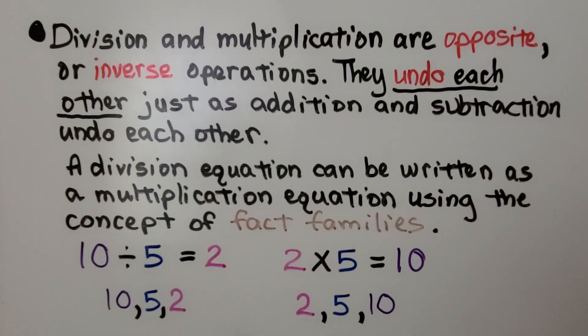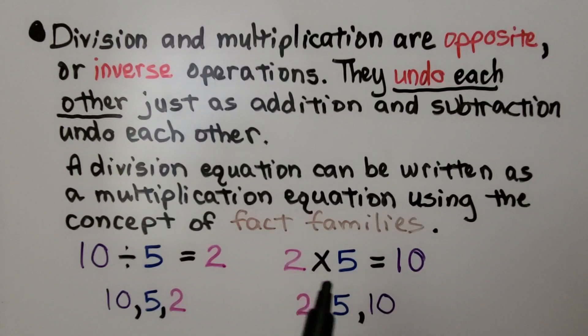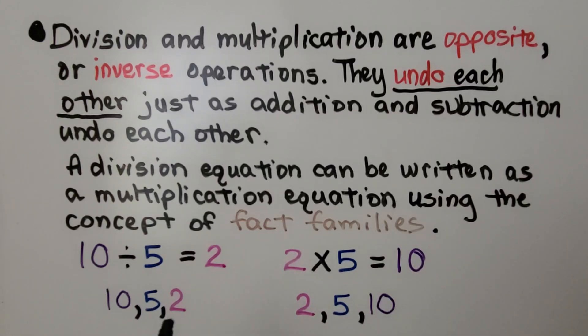10 divided by 5 is equal to 2, and 2 times 5 is equal to 10. We're using the fact family 2, 5, and 10.